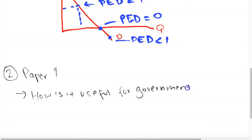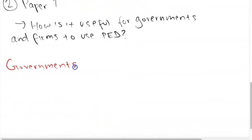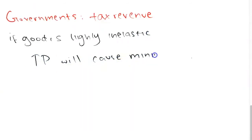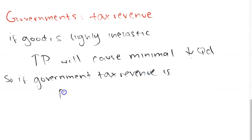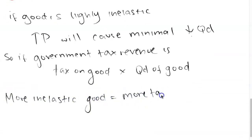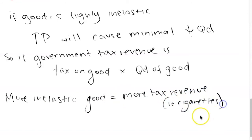The next question is: how is it useful for governments and firms to use price elasticity of demand? For the government, this relates to tax revenue — which is price times quantity. If a government places a tax on a good with inelastic demand, quantity demanded will decrease proportionately less than price increases, so government tax revenue actually increases. Whereas if the government taxes a price elastic good, quantity demanded will decrease substantially more than price increases, and revenue will fall.